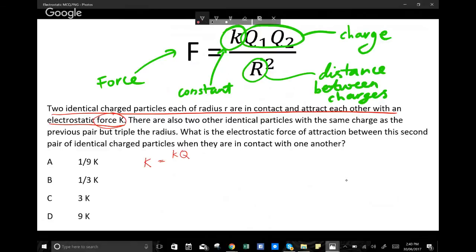So let's just call them Q for now. So it's going to be Q times Q divided by—and they are a radius of R away from each other—so I'm going to sub in little r squared.